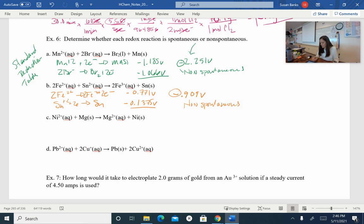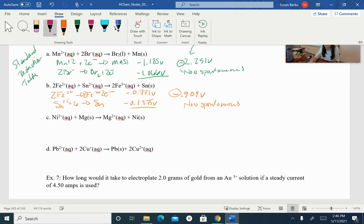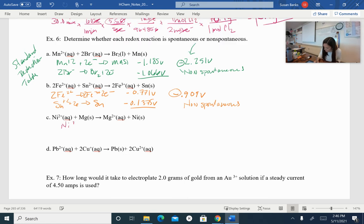So I would need at least 0.909 volts to get that to run. How'd you do on that one? All right, let's look at the next one. I've got nickel plus two. So nickel plus two plus two electrons going to solid nickel. When I look up that voltage, I get negative 0.257 volts.